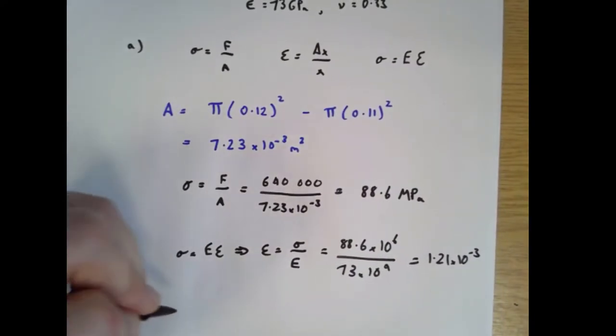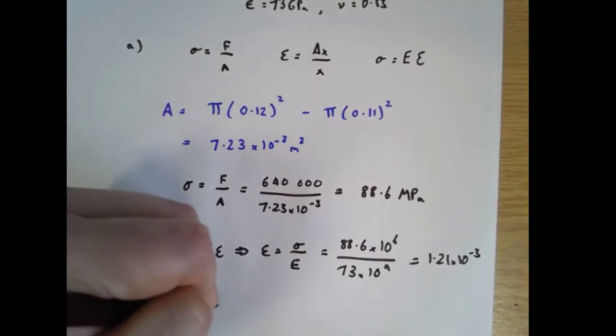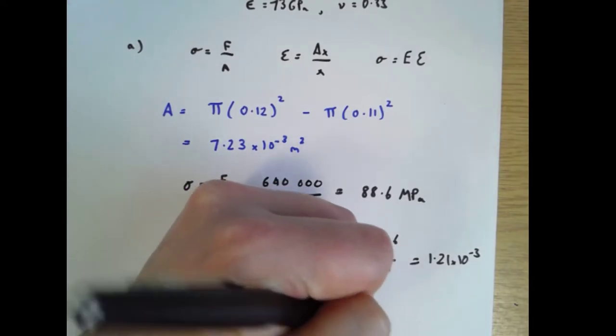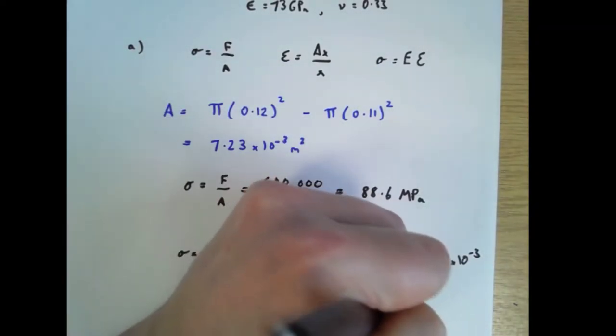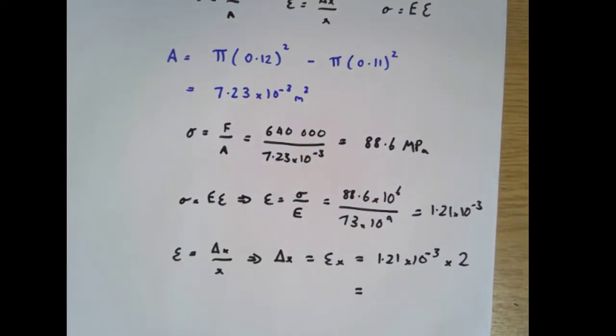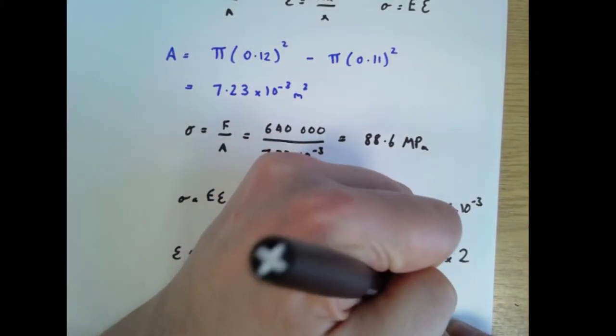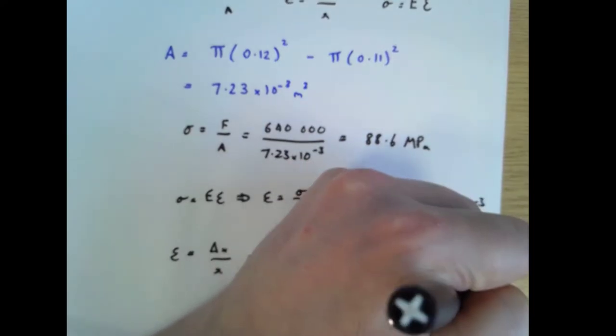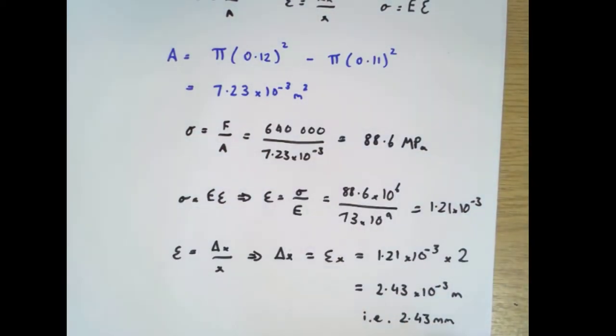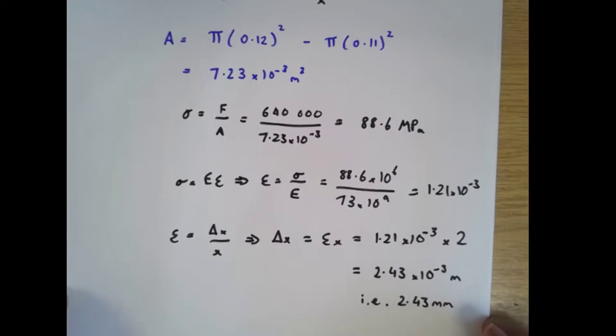And then finally we can say strain is delta x divided by x. So therefore delta x, the change in length, is strain times the original length, which is 1.21 times 10 to the minus 3 multiplied by 2 meters, which is 2.43 times 10 to the minus 3 meters, which is 2.43 millimeters. So that's how much the pipe changes in length. Next, let's move on. That's that bit done.